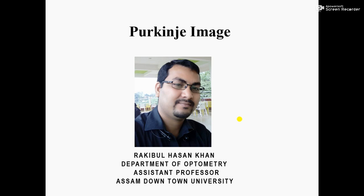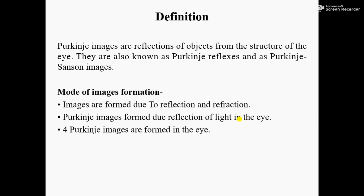The definition of Purkinje Images is: Purkinje Images are reflections of subjects from the structure of the eye. They are also known as Purkinje Reflexes and as Purkinje Sanson Images.